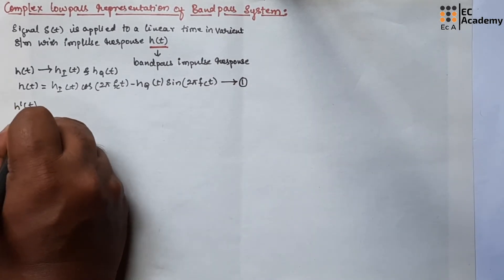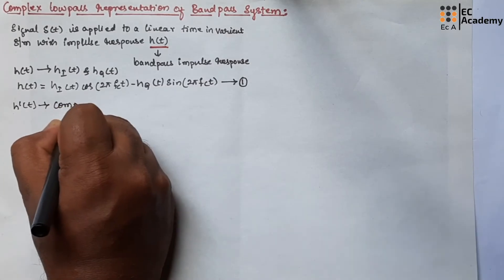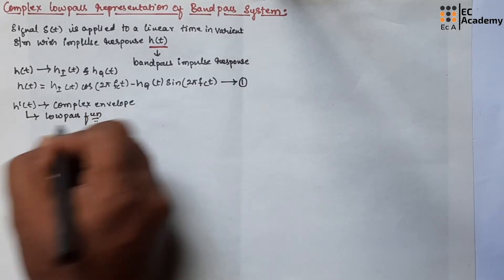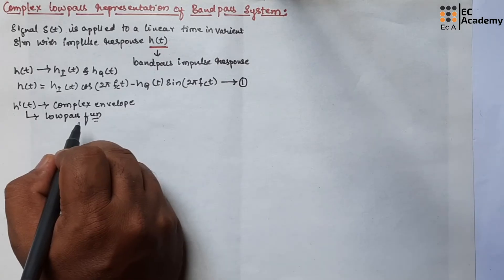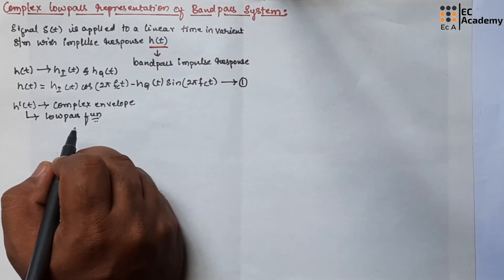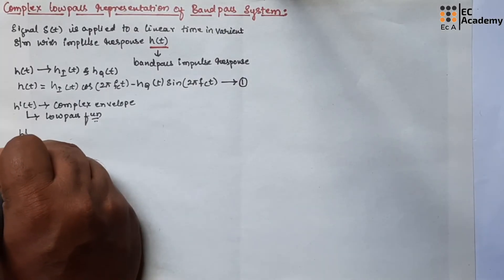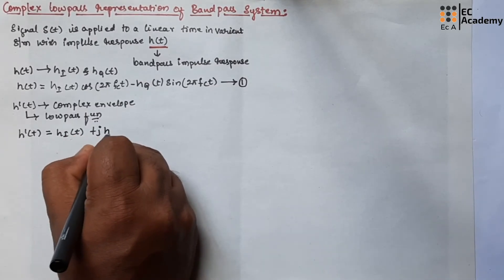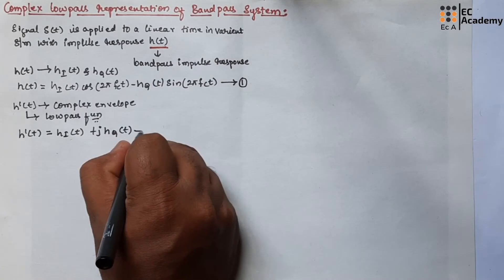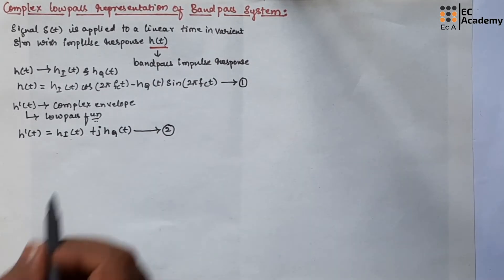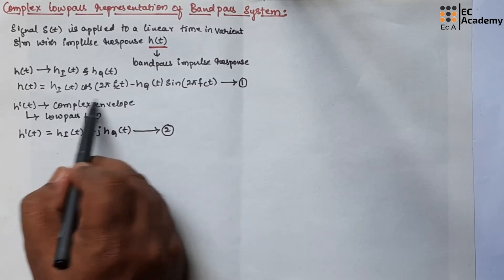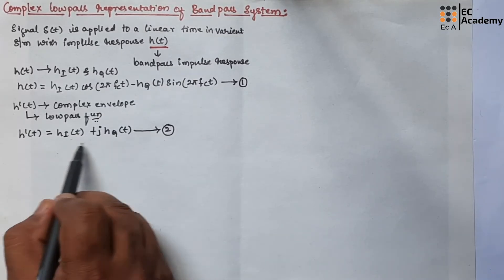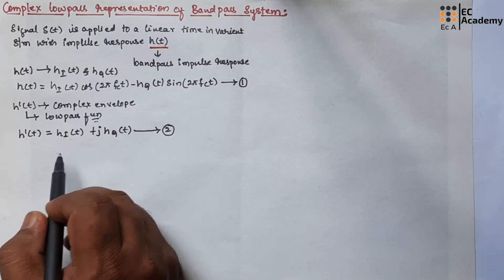Now let us consider H dash of t, which is the complex envelope. This complex envelope is a low pass function that can be represented in terms of quadrature low pass components as H dash of t = HI(t) + j HQ(t). Let us call this equation number 2. We have taken the impulse response and represented it in terms of quadrature low pass components, and the complex envelope is likewise represented in terms of those components.